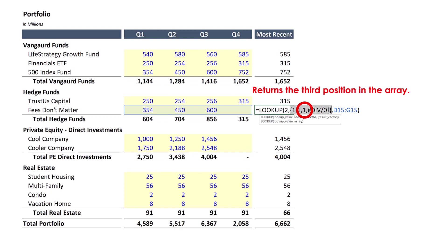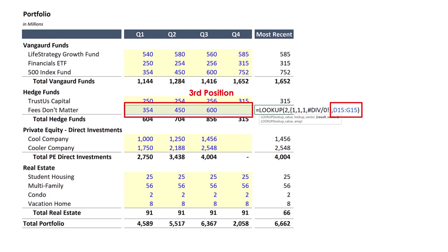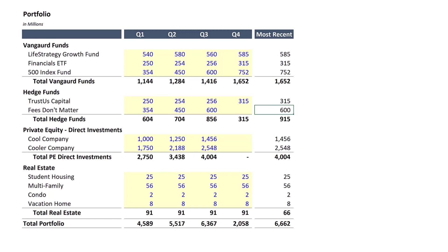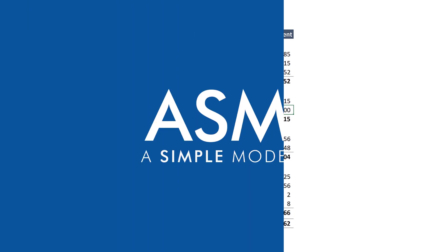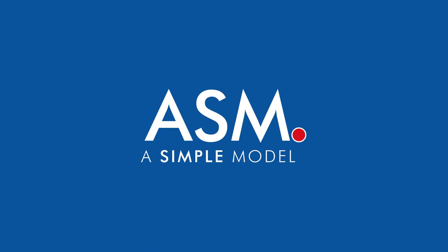Which in this case is the third value in the cell range. So Excel takes this position and applies it to the result vector and returns the value 600. Pretty awesome. Hope you liked it. You can download the Excel template at the link available below. That's all for now. Thanks for watching.